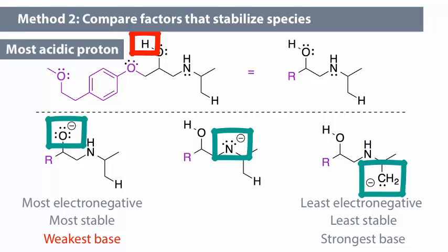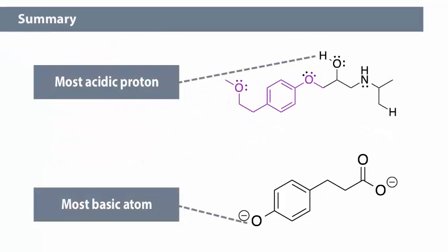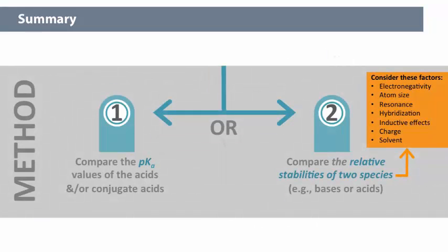To use method two to determine the most basic atom in a molecule, you can directly compare the basic atoms, instead of drawing the conjugates first. In summary, in this video you learned to identify the most acidic or basic atom within a single molecule, using method one and method two.